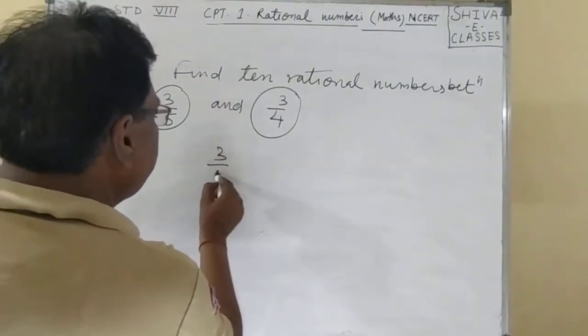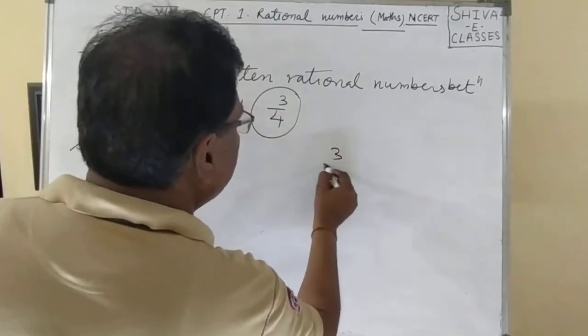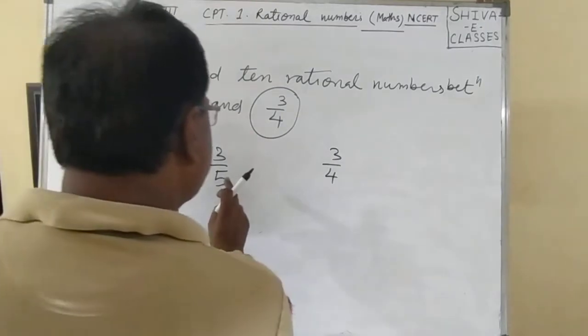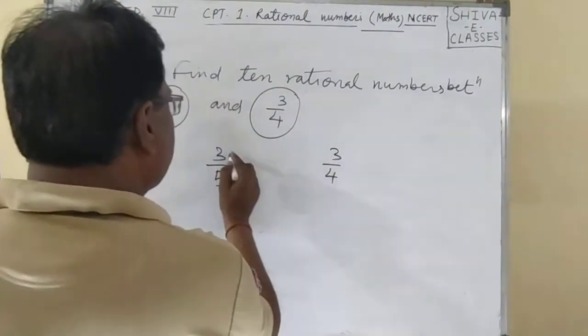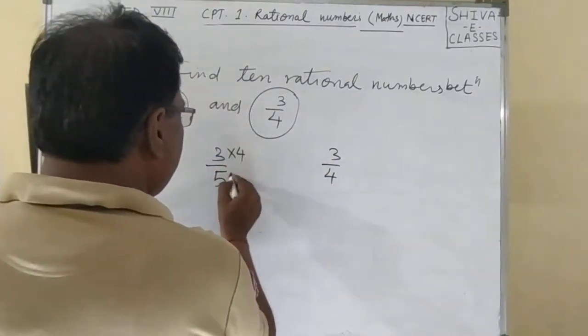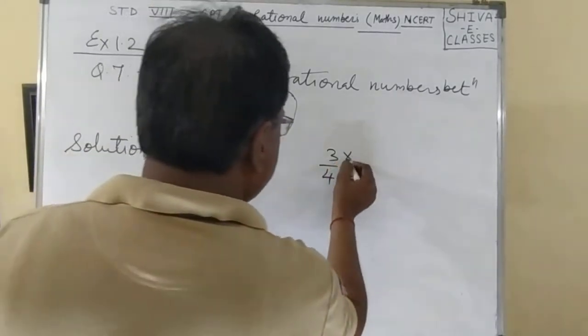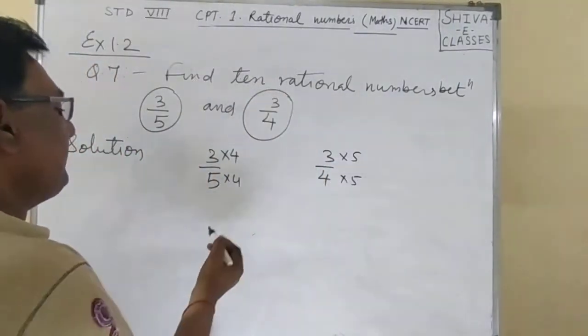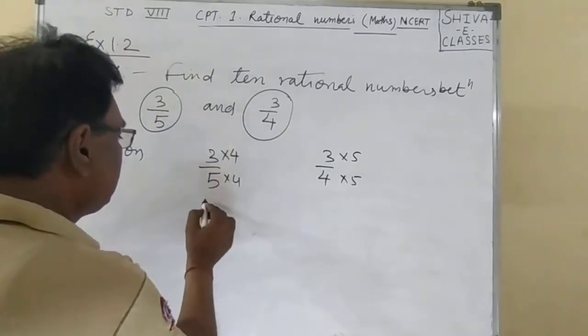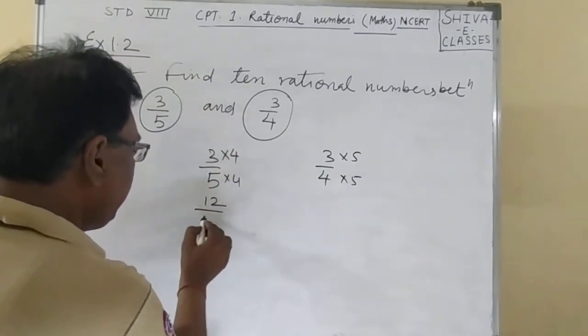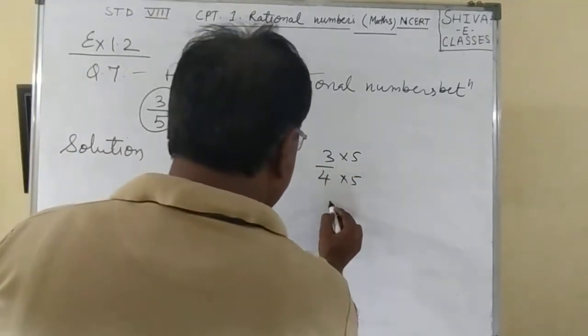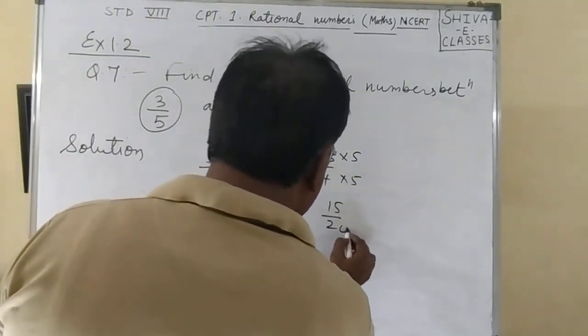3 by 5 and 3 by 4. These are the denominators. Multiply 4 into 4, 5 into 5. First we can make the denominators equal. So 3 by 4 becomes 12 by 20, and 3 by 5 is 15 by 20.